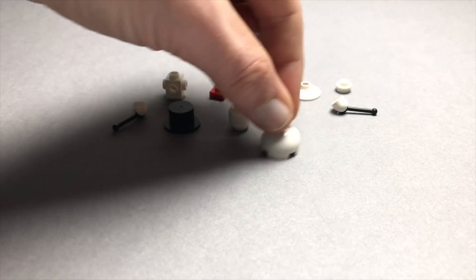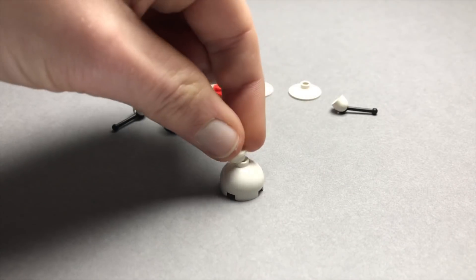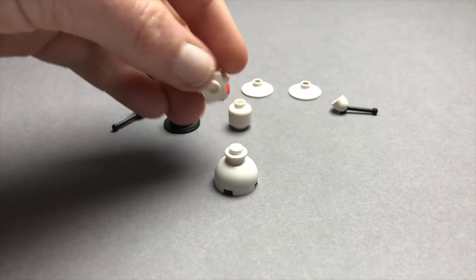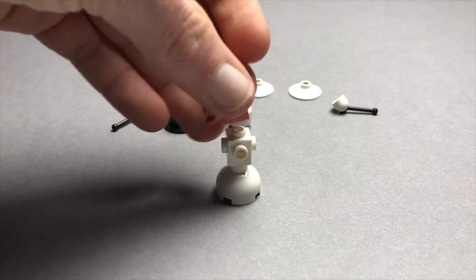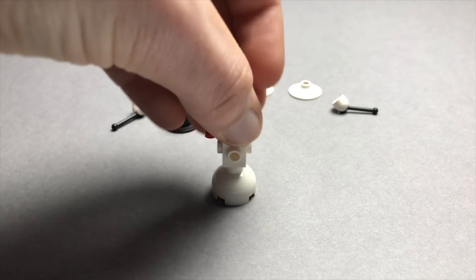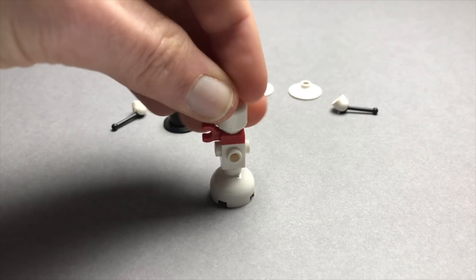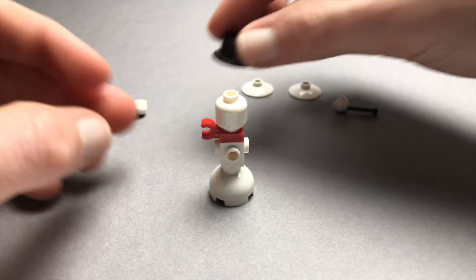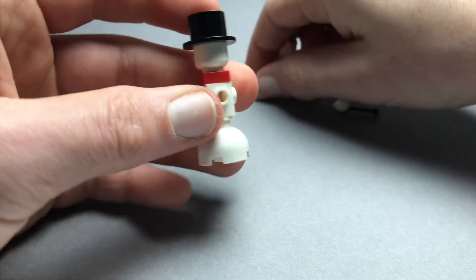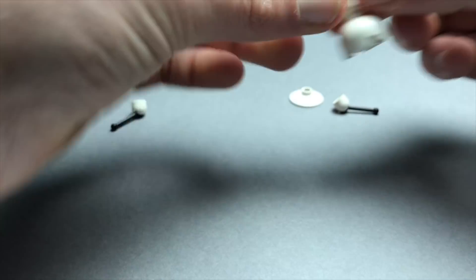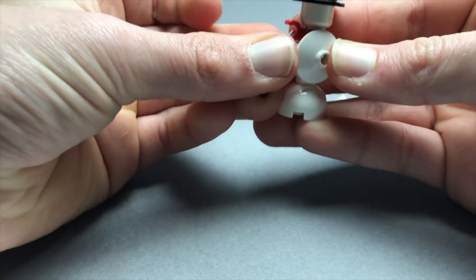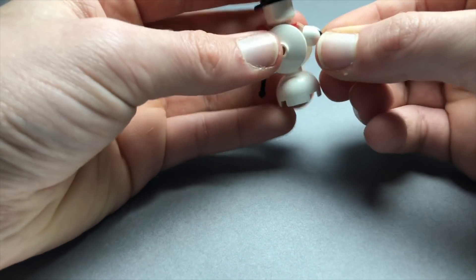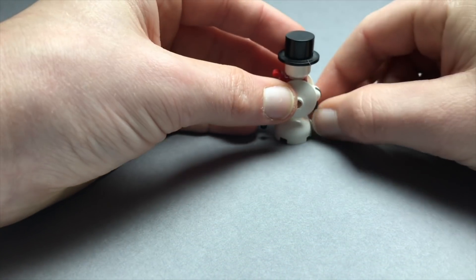To make a snowman, take one of these domes, then a 1x1 stud, then a brick with studs on all sides, then one of these red clips, and a minifigure head which is in white, and finally your top hat. And then to add on the details, just take two dishes, put those on either side, and then you can take two levers to act as the arms.